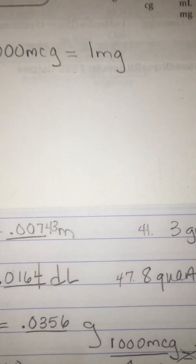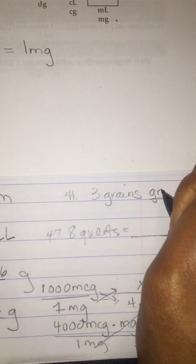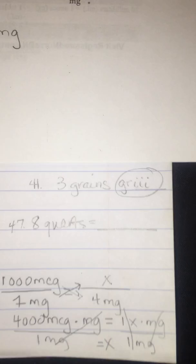Okay, on forty-one. They want just how to write this. This is also in your text. Three grains: you write that, of course with grains, you're going to write the gr first and then the three to indicate this means three grains. So that's it with that one.